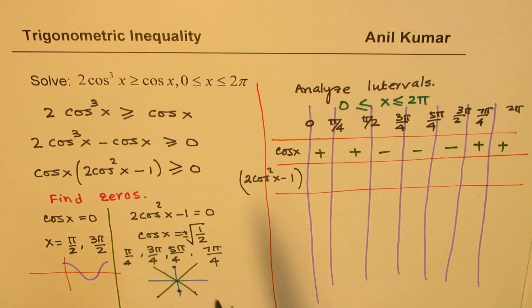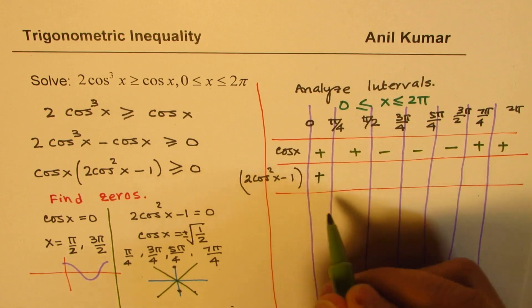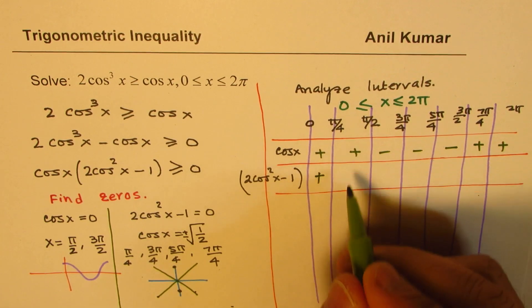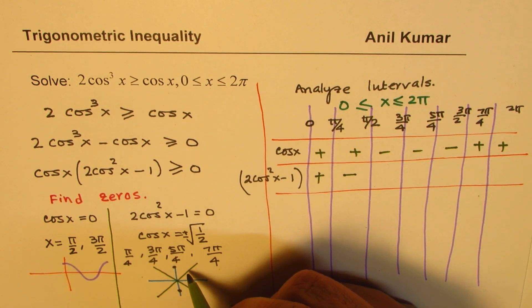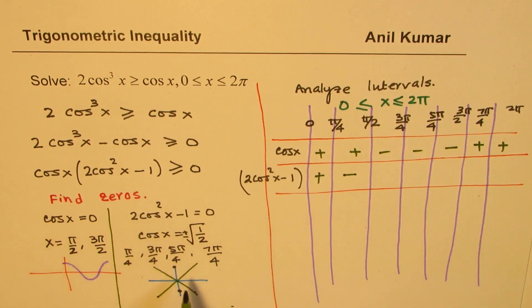Now, for the other function, which is 2cos²x - 1, it is becoming 0. So to start with, it has the highest value, so it is positive. But at π/4, it becomes 0. That means changes sign.